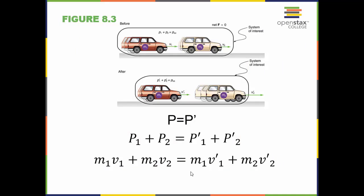Whenever we have momentum and a collision, we start with conservation of momentum. The momentum of 1 plus the momentum of 2 before the collision equals the momentum of 1 plus the momentum of 2 after the collision — using p and p prime notation. So: m1·v1 + m2·v2 = m1·v1' + m2·v2'.